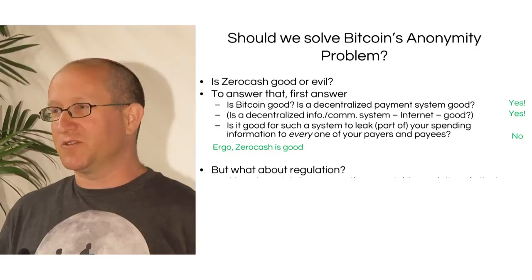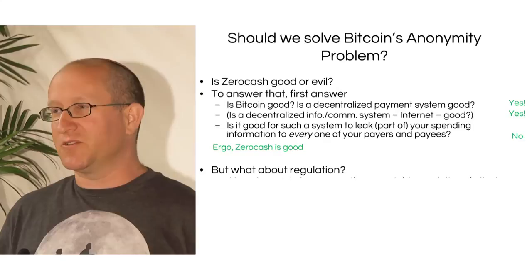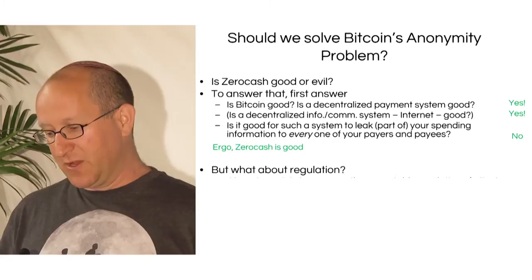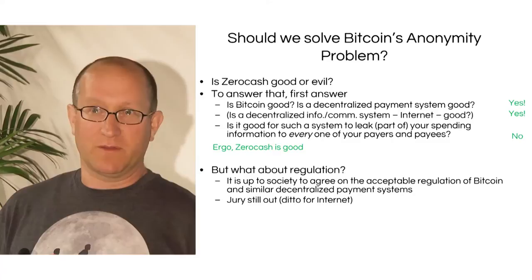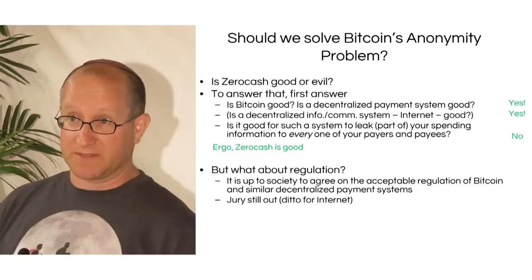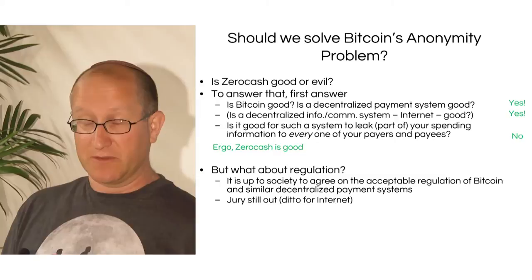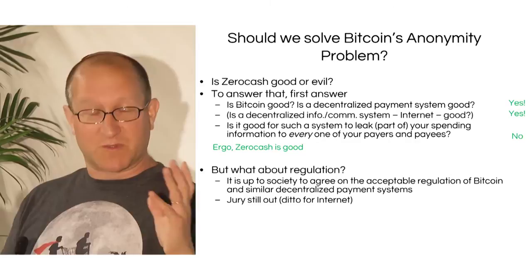People may ask about regulation and taxes. It's up to society in different countries to decide what kind of regulation they want for decentralized anonymous payment systems, just as they have to decide on the right regulation for information systems like the Internet. The jury is still out, but society will converge on the right ways to regulate.